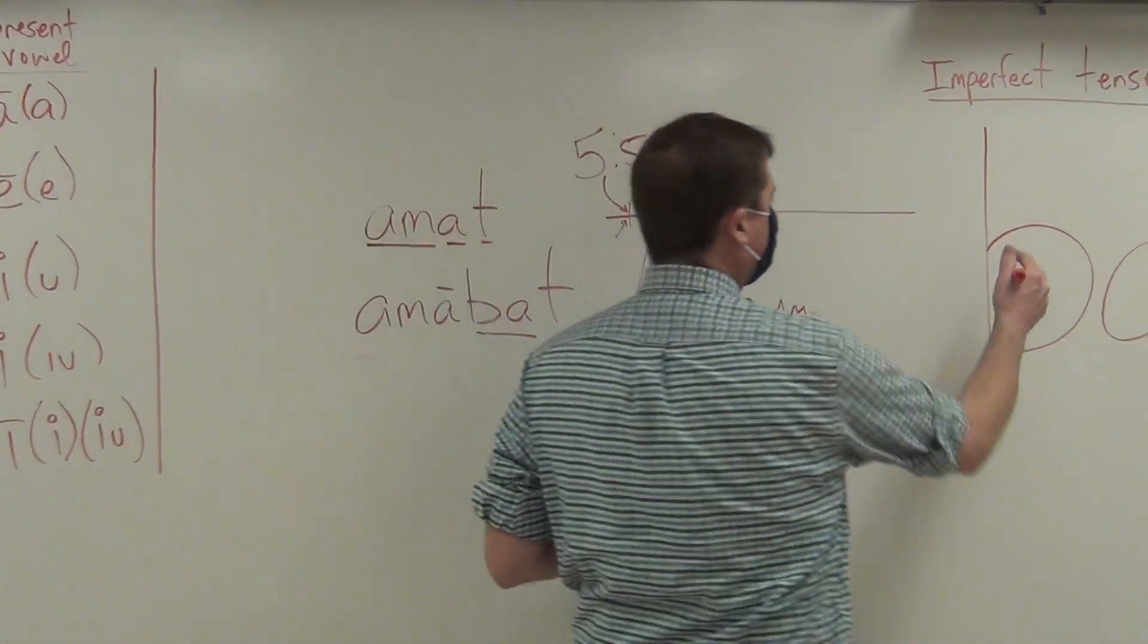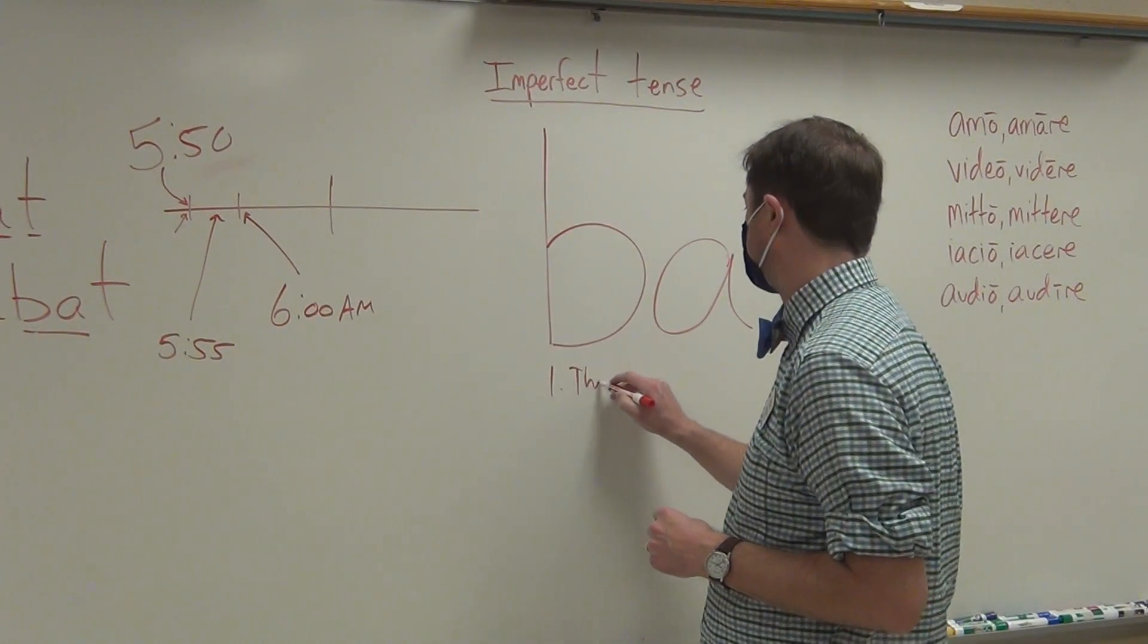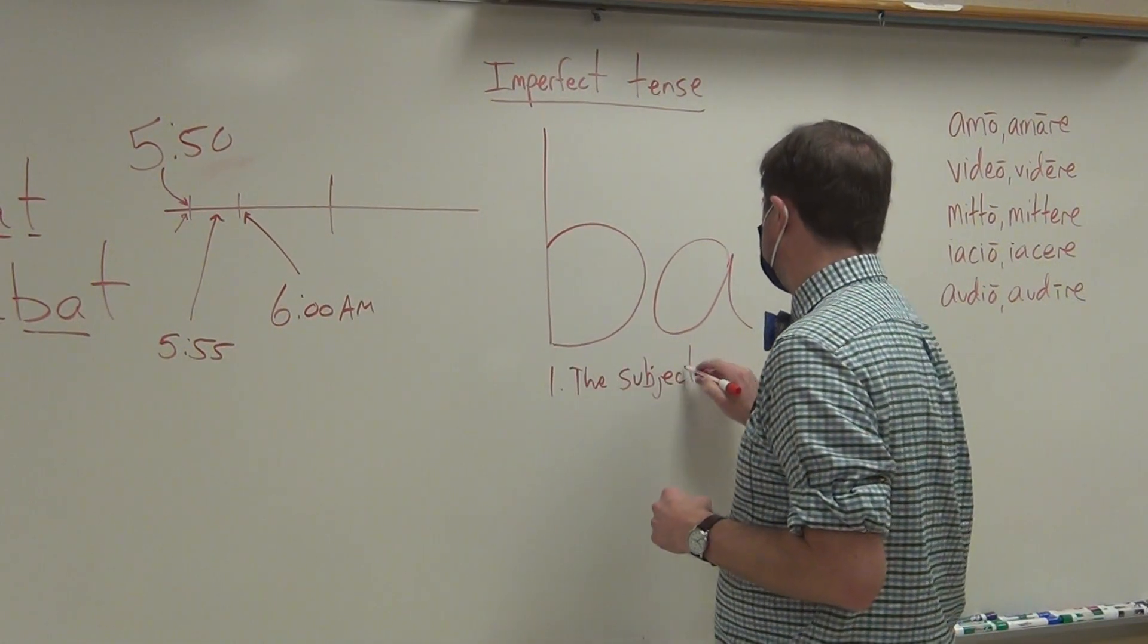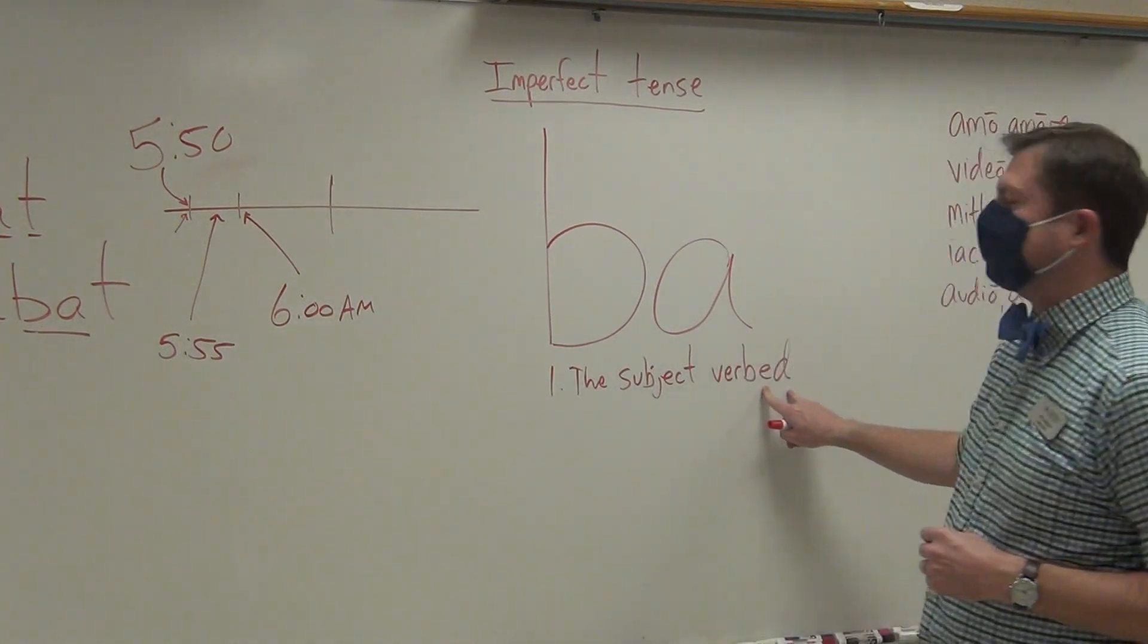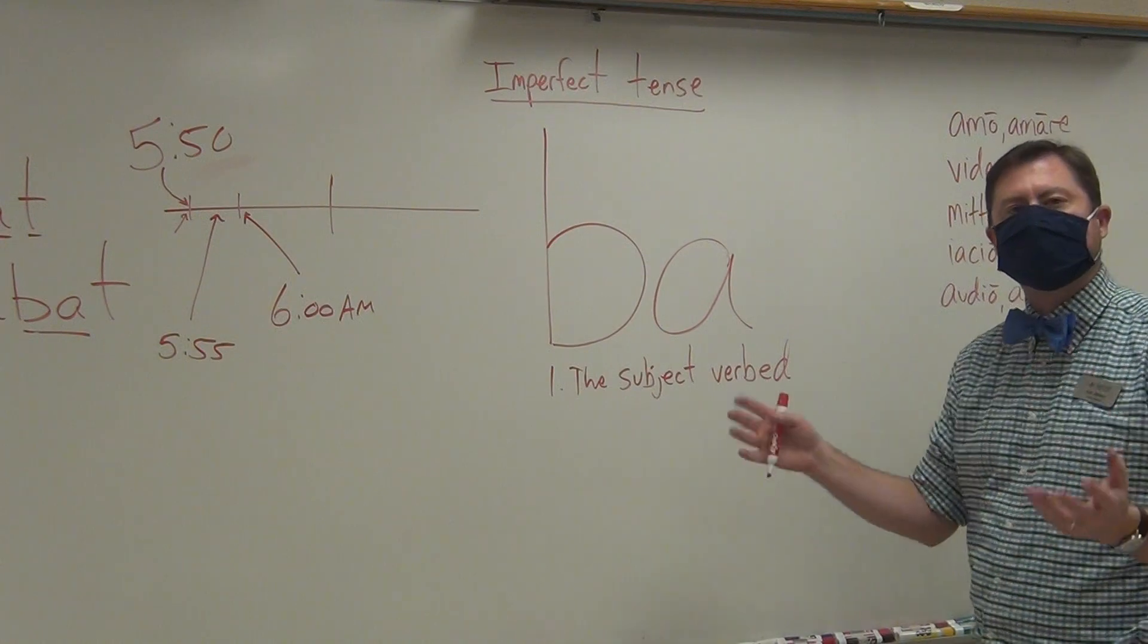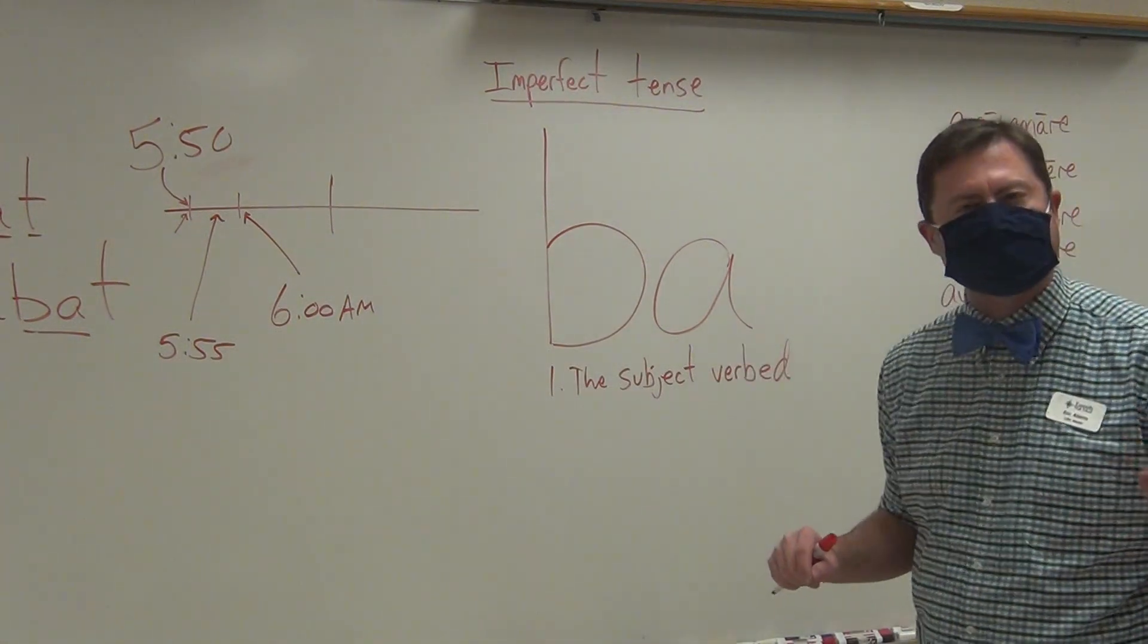So I suppose I can put it underneath that BA. So the first way, you can simply say the subject verb, simply add an ED to the end of the verb to indicate past. This is called a simple past expression in English.